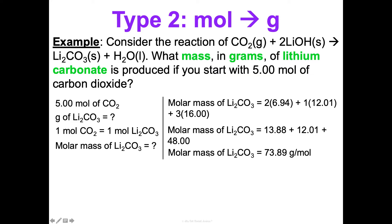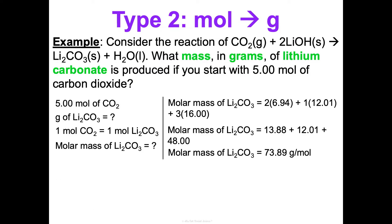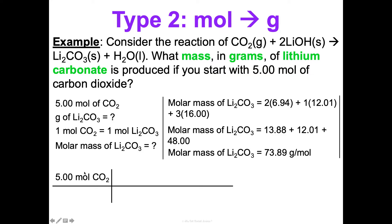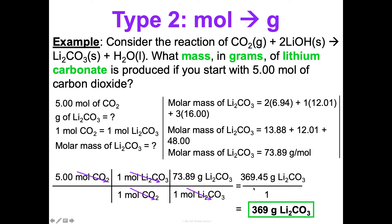Now I have everything I need to move forward. This is going to be a two-step problem — I'm going to use a mole ratio and a molar mass, so two conversion factors. Start with what we know: five moles of carbon dioxide. I know there's one mole of carbon dioxide for every one mole of lithium carbonate — plug that in, put carbon dioxide on the bottom so it cancels out. Then I have the molar mass: one mole of lithium carbonate for every 73.89 grams of lithium carbonate. Those cancel out, getting me to grams of lithium carbonate.